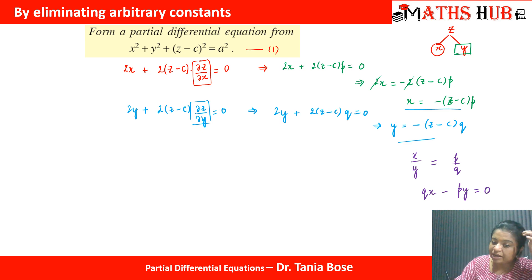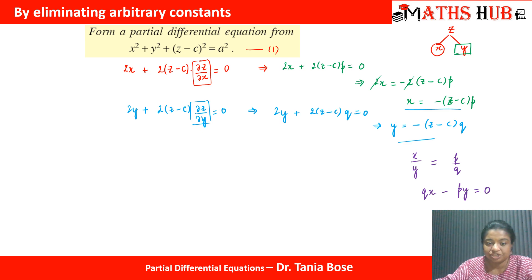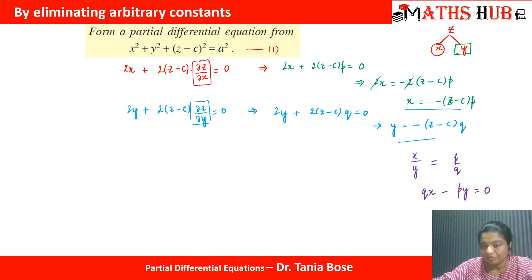Dividing the two equations, the (z − c) factor cancels along with the minus signs, giving p/q = x/y. Cross-multiplying gives qx − py = 0, and this becomes the partial differential equation.